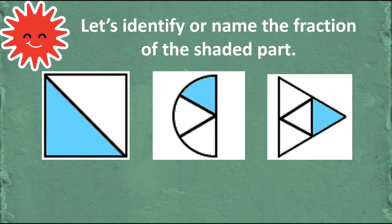Okay? Now, let's identify or name the fraction of the shaded part. Let's start with the first one. The square. What's the fraction? Very good. It's 1 half.